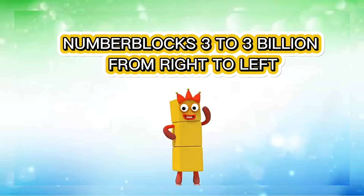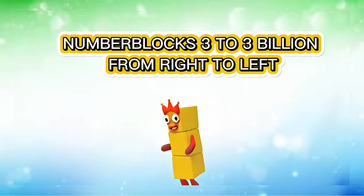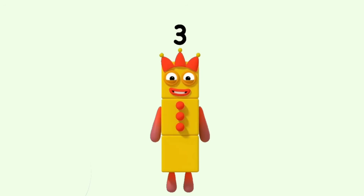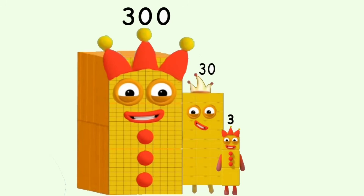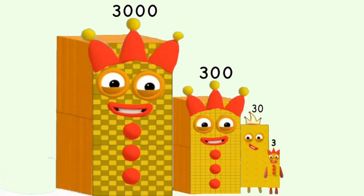Number box 3 to 3 billion, from right to left. 3. 30,000,000.